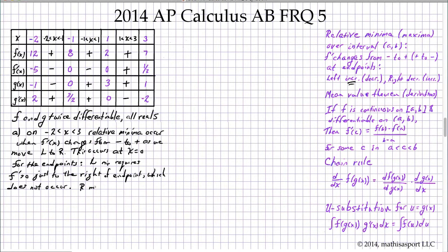And min on the right requires that f prime is less than 0 just to the left of the endpoint. And that also does not occur. The answer is x equals 0.